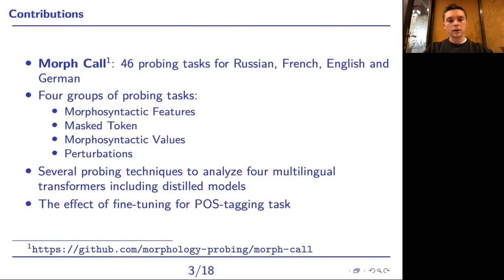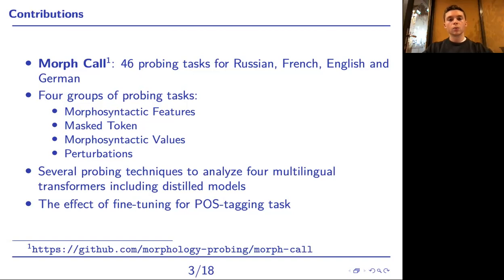Inspired by the idea of linguistic acceptability, we propose a group of tasks called perturbations, consisting of different syntactic and inflectional perturbations of sentences. Using these tasks, we apply three probing methods to conduct the analysis of four multilingual transformer models, including their distilled versions, which are also underexplored. Finally, we study the effect of fine-tuning for part-of-speech tagging tasks on model knowledge.